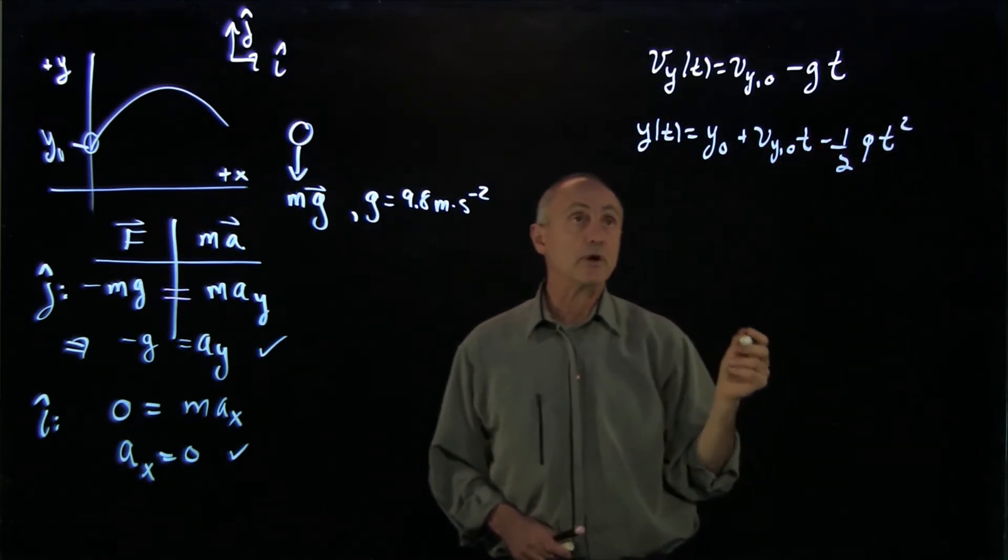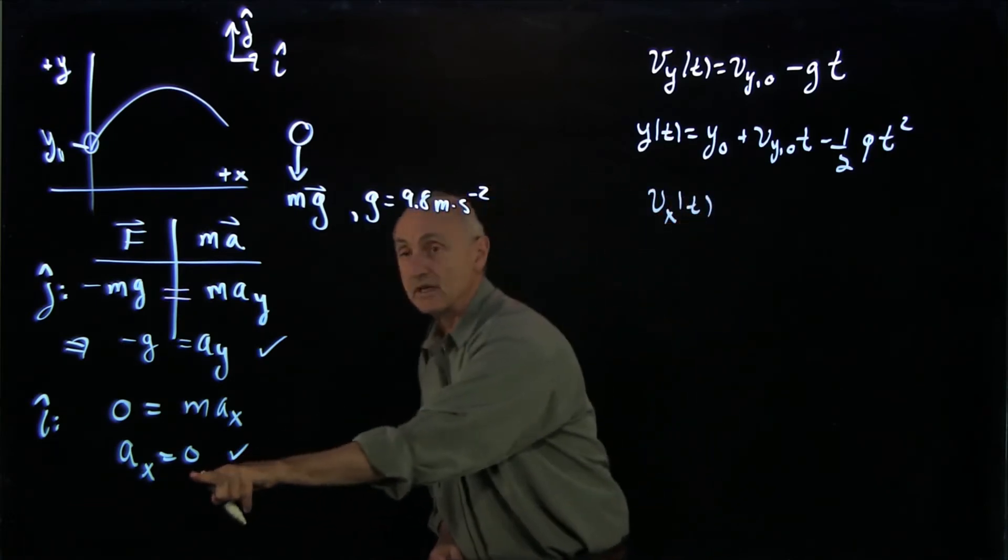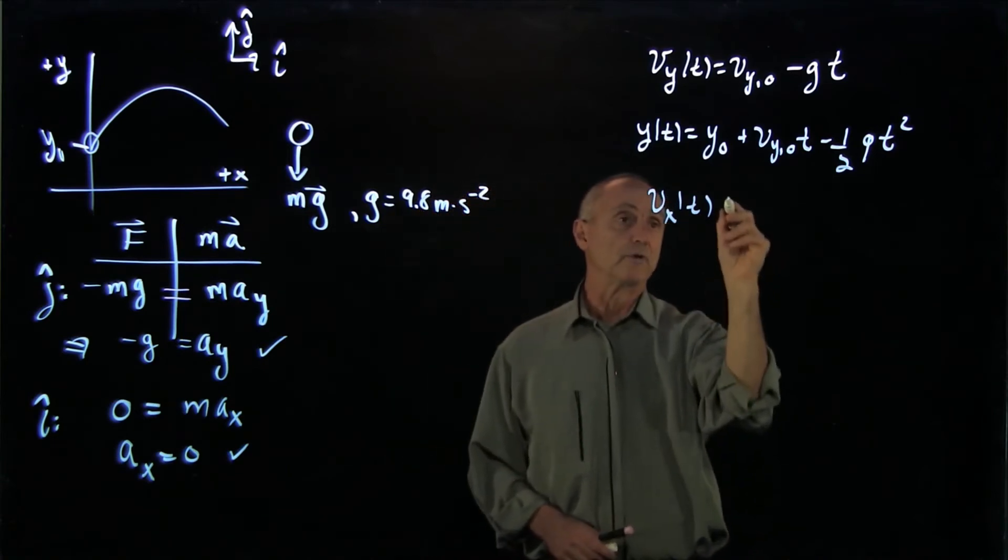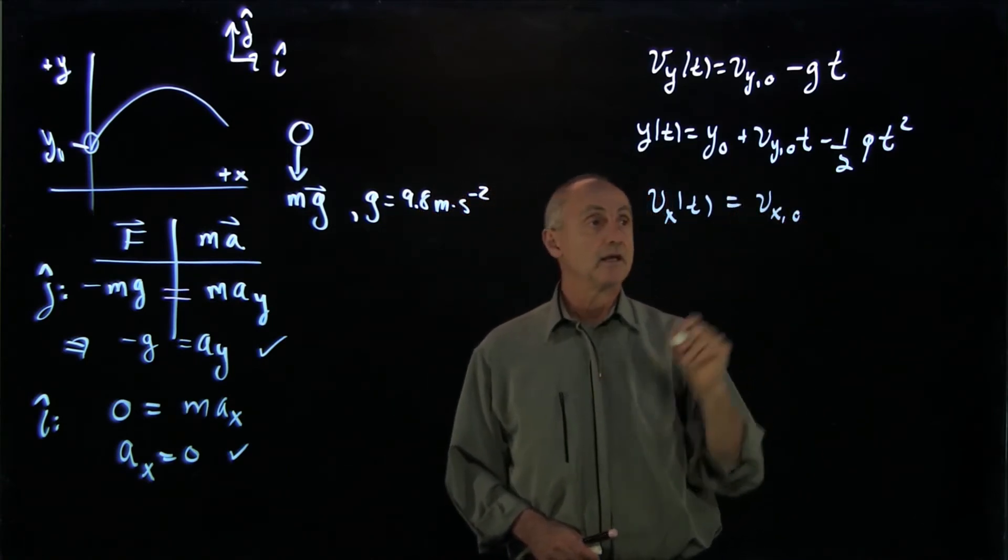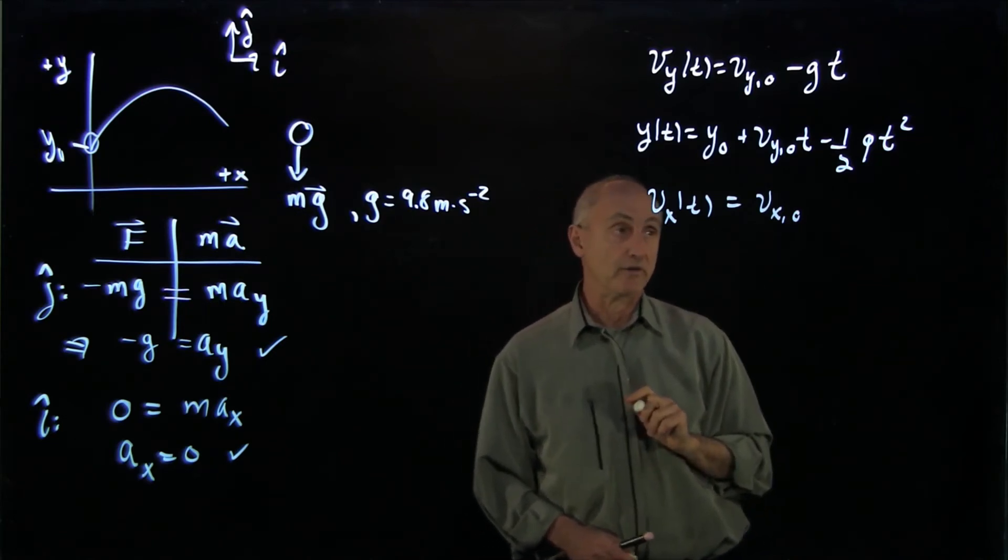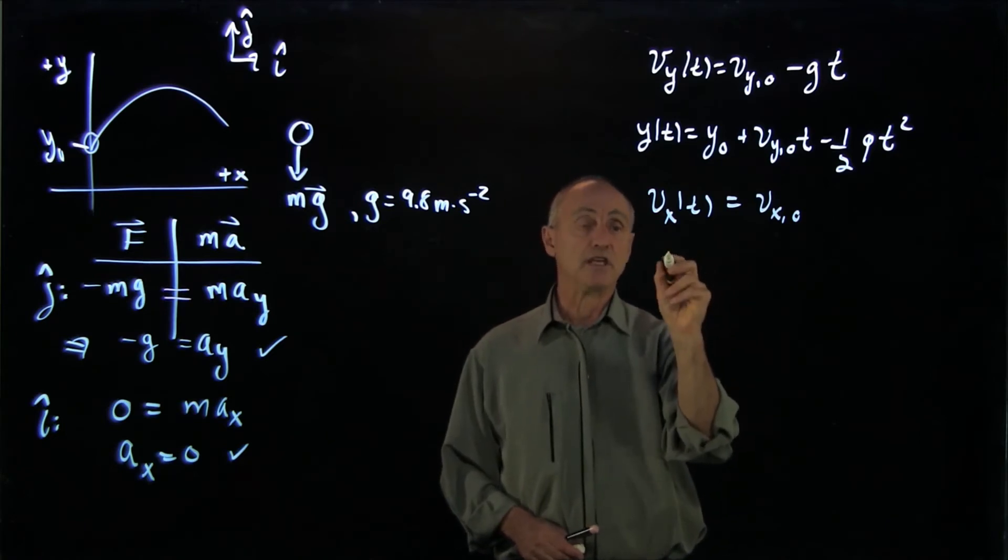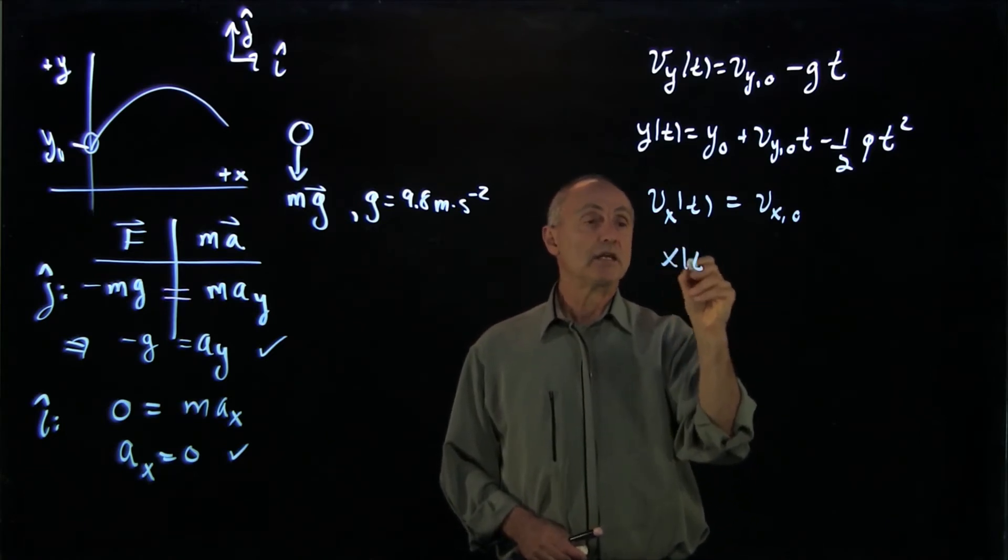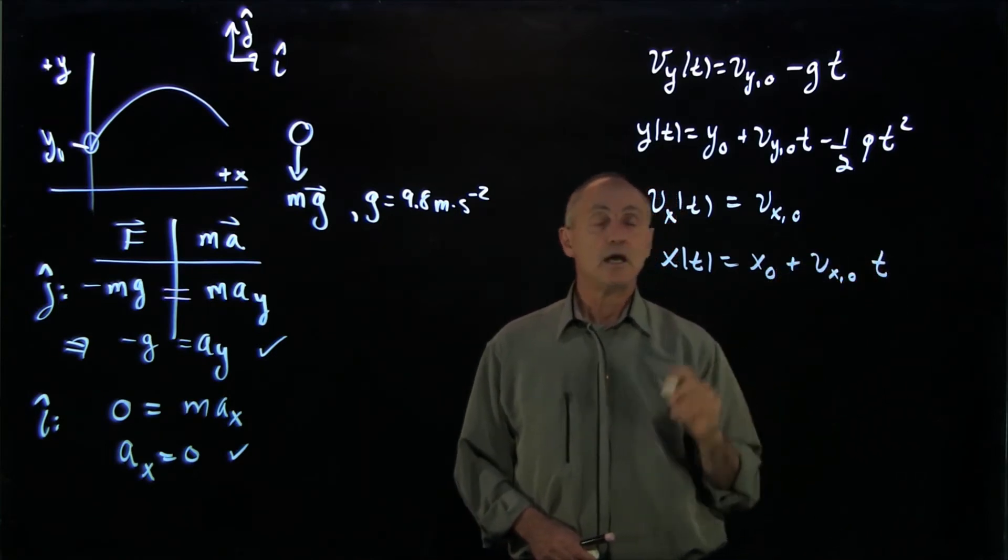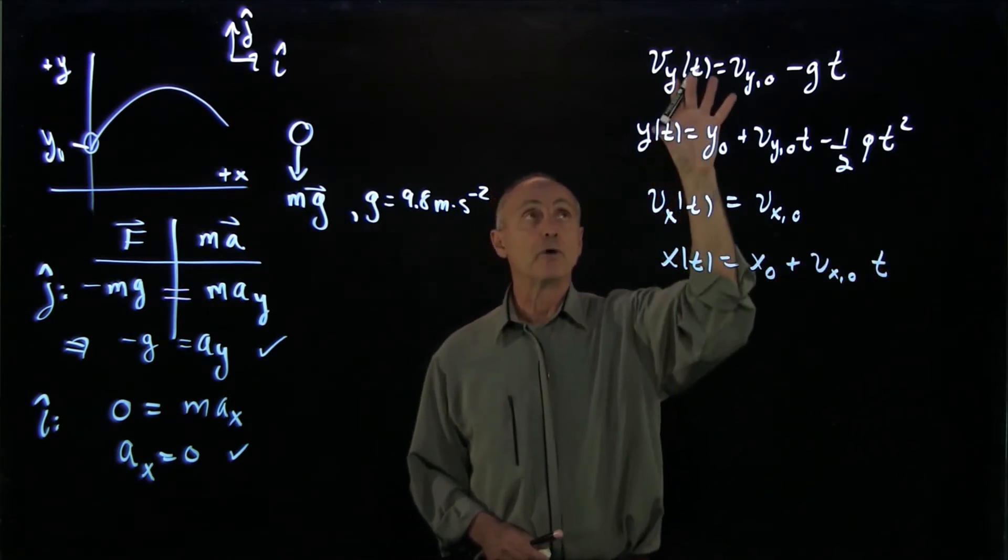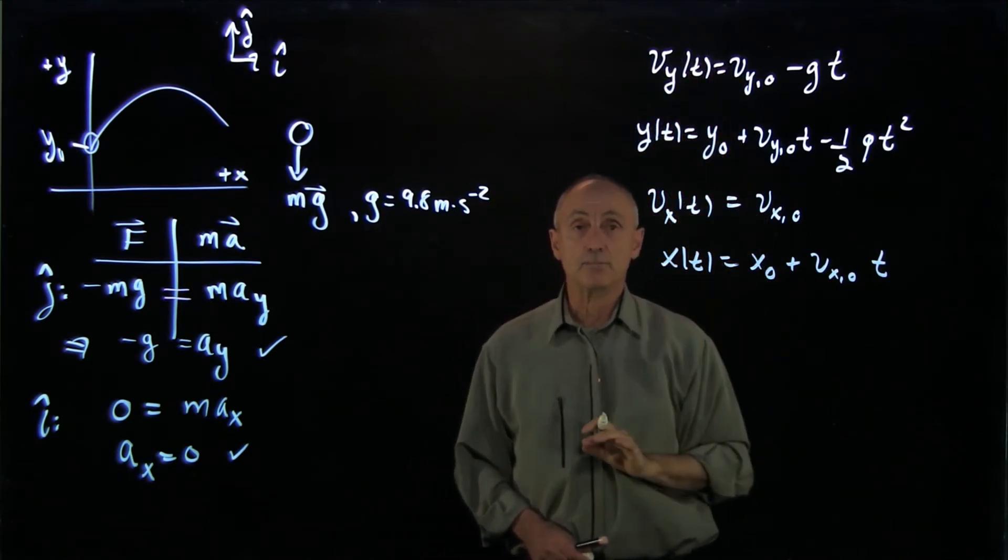Now, the horizontal equation of motion: x of t, because there is no acceleration in the horizontal direction, the velocity is a constant value given by the initial value of the component in the x direction, vx0. And the position x of t is then equal to some initial position x0 plus vx0 t. So those are our functions of time for the components of velocity and position.